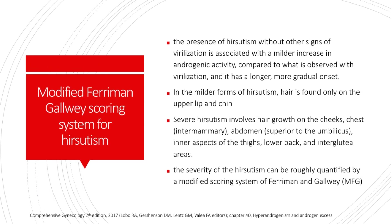The presence of hirsutism without the other signs of virilization is associated with a milder increase in androgenic activity compared to what is observed with virilization, and it has a longer, more gradual onset. In the milder forms of hirsutism, hair is found only on the upper lip and chin. Severe hirsutism involves hair growth on the cheeks, chest or intermammary space, abdomen (superior to the umbilicus), inner aspects of the thighs, lower back, and intergluteal areas. The severity of hirsutism can be roughly quantified using a modified scoring system — the Ferriman-Galloway, or MFG scoring system.